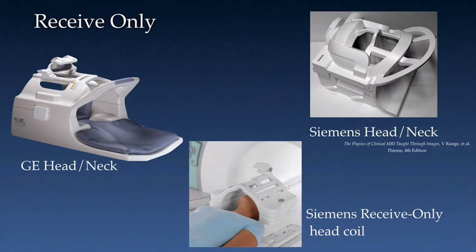Here are some receive-only coils from a cylindrical higher field system. On the left, a GE head and neck coil. On the right, a Siemens head and neck coil. And in the middle, a receive-only head coil, this one from a Siemens system.